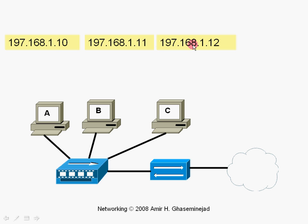So when computer A wants to compose the IP packet, it knows its own IP address and the IP address of the destination, so it will compose the packet. But then computer A thinks: is the destination in the local subnet, or is the destination in a remote subnet?